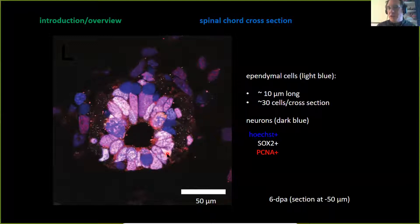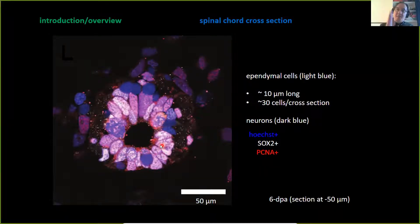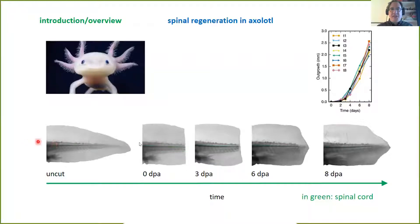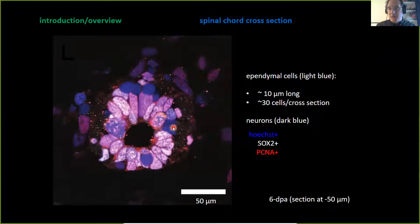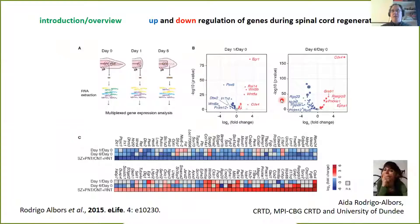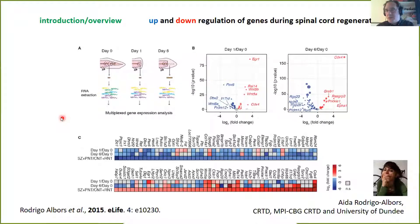These ependymal cells are responsible for the process of regeneration. Six days post-amputation you have roughly 30 cells in circumference, and along the anterior-posterior (AP) axis the cells have a diameter of about 10 microns. What was realized is that when you cut the spinal cord, what we observe in these ependymal cells is an upregulation of genes related to proliferation and a downregulation of genes related to differentiation — that is, neurogenesis in this case.